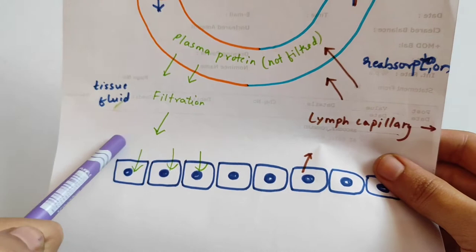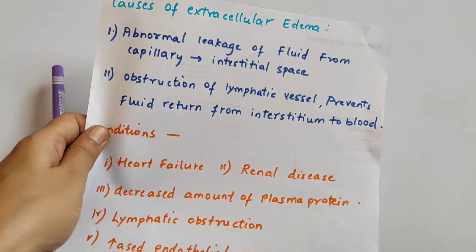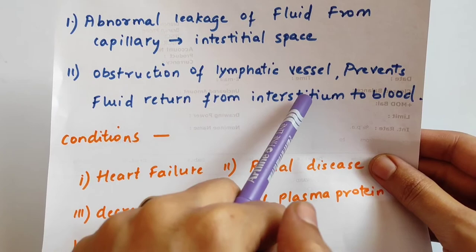In extracellular edema, fluid accumulates in the interstitial space. The first cause is abnormal leakage of fluid from the capillary to the interstitial space. The second cause is obstruction of the lymphatic vessel, which prevents fluid return from the interstitium back to the blood.